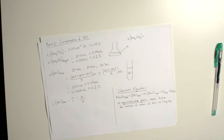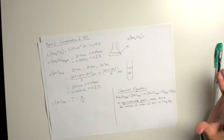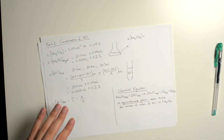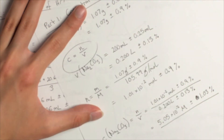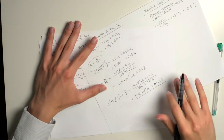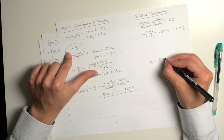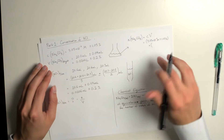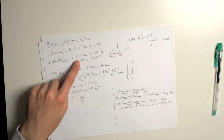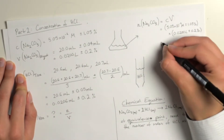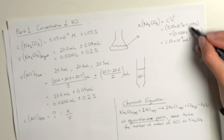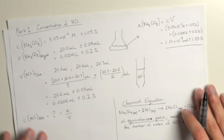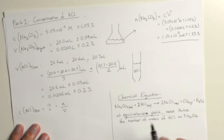For the aliquot, we would normally use mass divided by molar mass, but since we're using volumetric analysis we have to use a different equation. Concentration equals moles over volume, which we can rearrange to: moles equals concentration times volume. The volume we used is 20 milliliters. We add the relative uncertainties together — 1.03 plus 0.2 — and there's the number of moles.